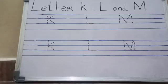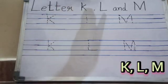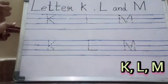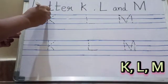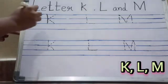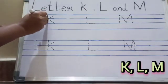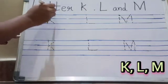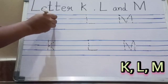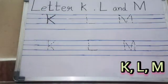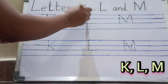To write letter K, L and M. K. Make a standing line from between. Make a slanting line towards upwards and towards downwards. This is letter K. Next for L.